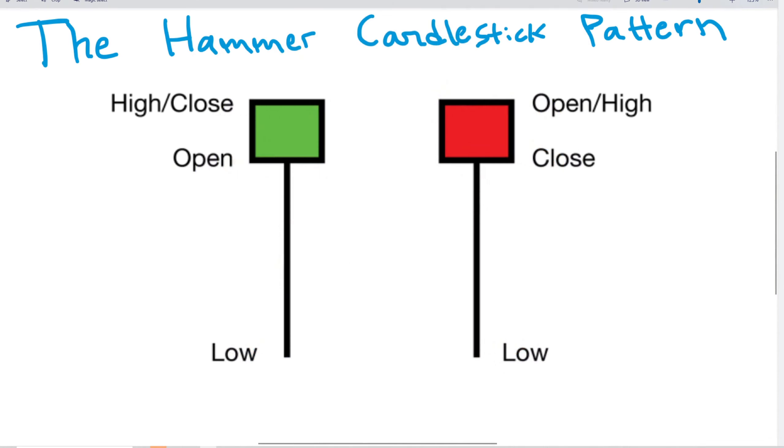Alright so here on the screen we have two hammers and let's take a quick look at what defines a hammer. So a hammer should have a small real body and a long lower shadow. The real body is this wide part of the candle and shadows are the longer parts. The lower shadow is the shadow that is below the real body. So in this case you can see we have a small real body, green real body, and we have a long shadow.